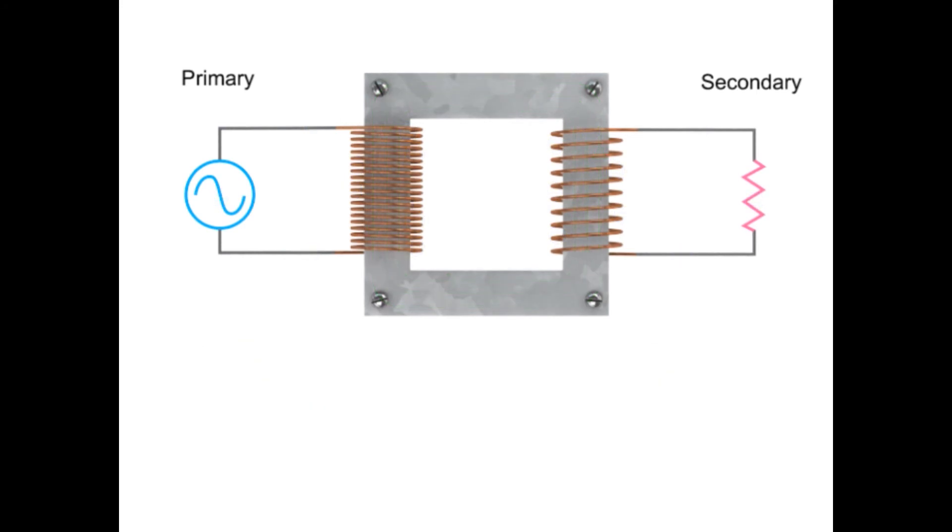If there are fewer coil turns on the secondary than on the primary, this is called a step down transformer. The resulting voltage in the secondary circuit will be less than the primary.